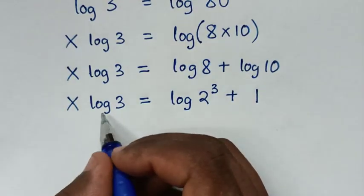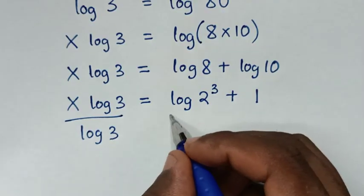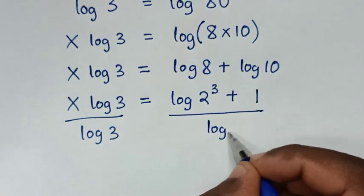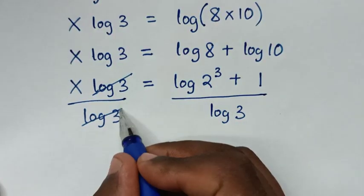Then we'll divide by log of 3 on both sides. Then this log of 3 will cancel this log of 3.